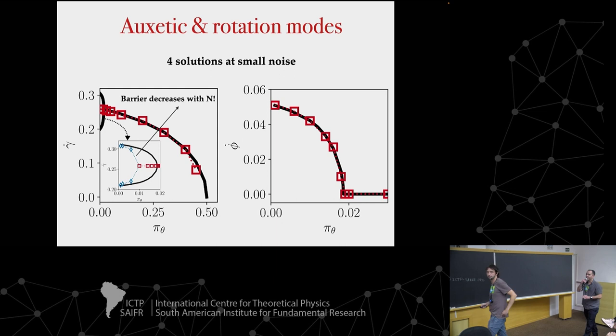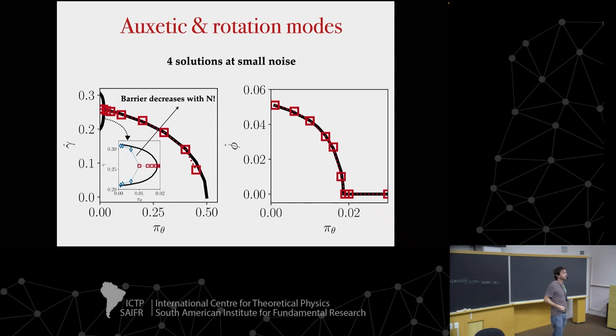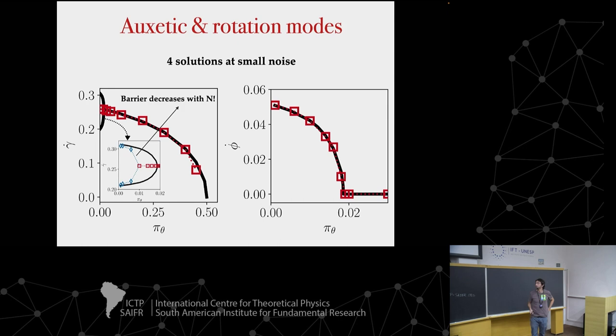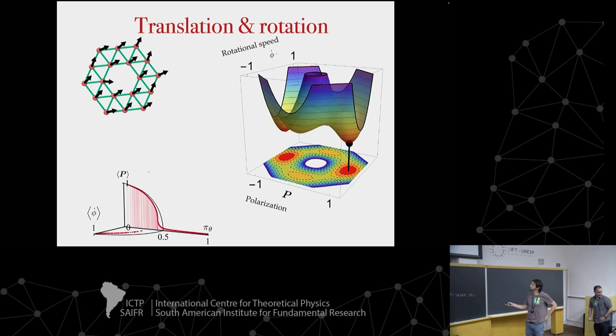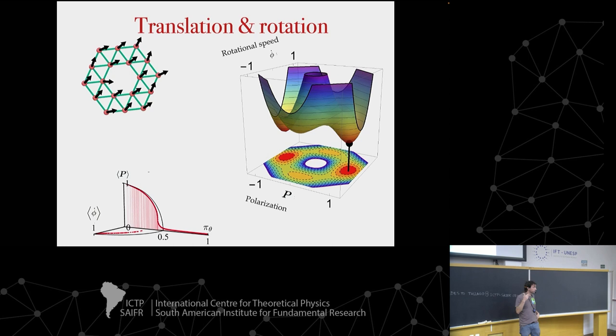Suppose you change the network — say, use a Kagome lattice. Do you observe universal behavior? Networks that are more interesting are those with floppy modes, because a well-coordinated network has only translation and rotation. For a twisted Kagome, I think the behavior is very similar because it also has a kind of auxetic behavior — so you would expect similar phenomena. The transition point would not be the same, of course, but the phenomenology would be similar.